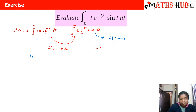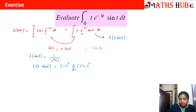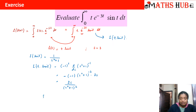To compute L{t·sin(t)}, we start with L{sin(t)} = 1/(s²+1). Using the multiplication-by-t property, L{t·sin(t)} = minus the first derivative of (s²+1)^(-1). Differentiating gives a double minus sign: (s²+1)^(-2) multiplied by 2s, which finally becomes 2s/(s²+1)².